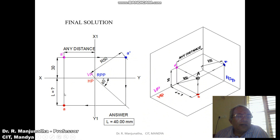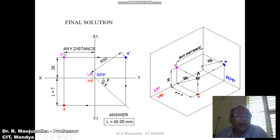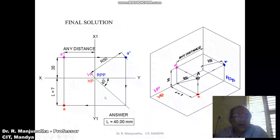Measure the distance from here to this point, L equals question mark, and write the answer as L equals 40 mm. This is the final solution to be written in the sketchbook. Give the dimension of 30 mm, and write any distance for the profile plane — it is just for understanding purposes. From here to here, measure the distance as R equals 50 mm. This is how you write the final solution.